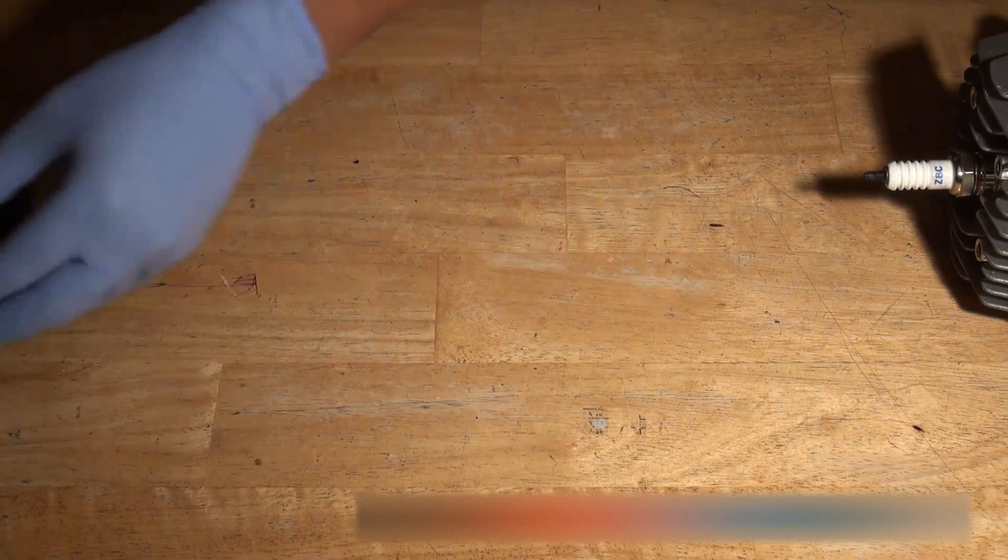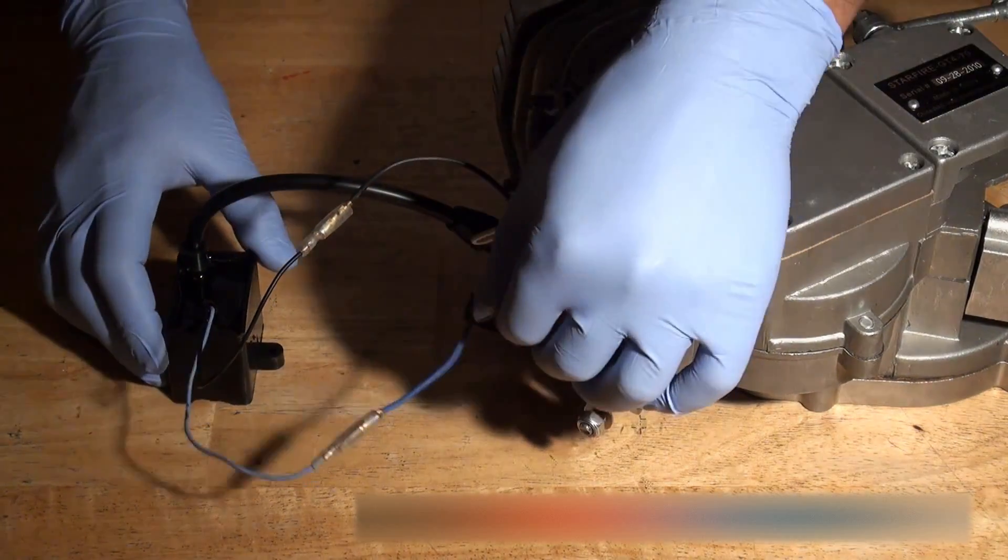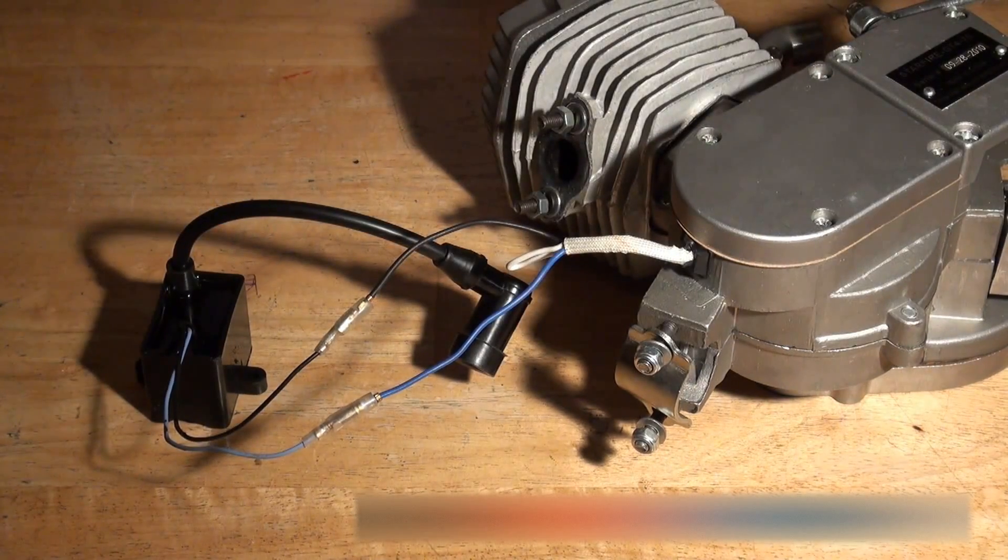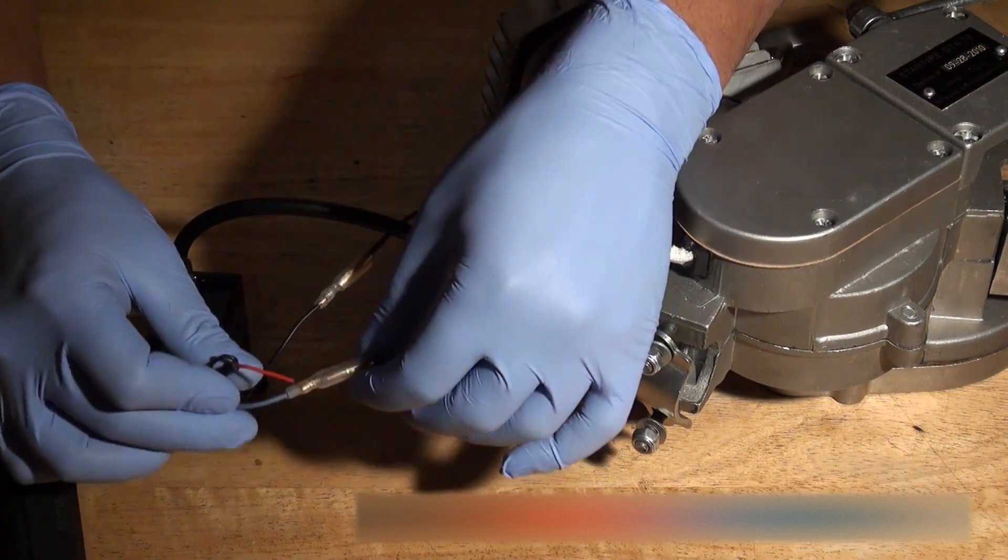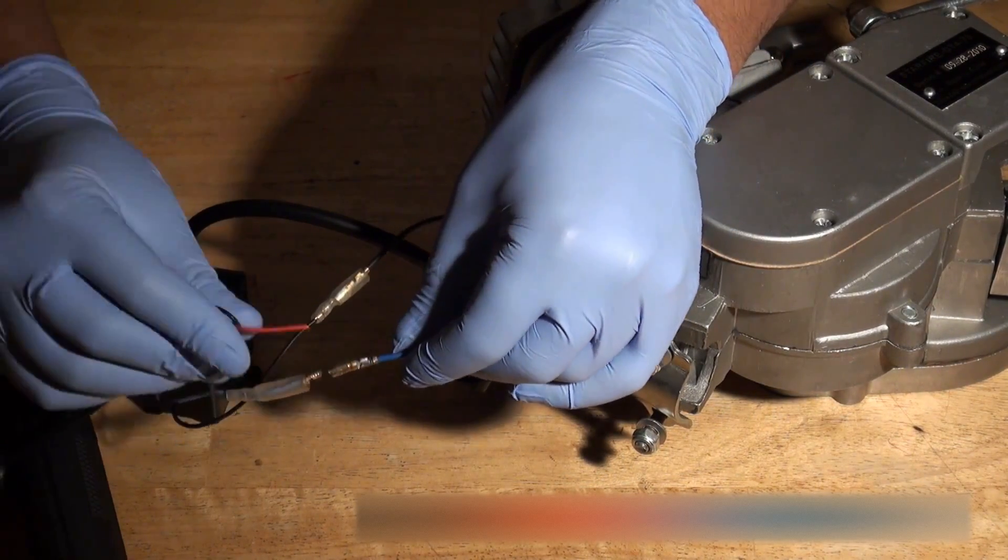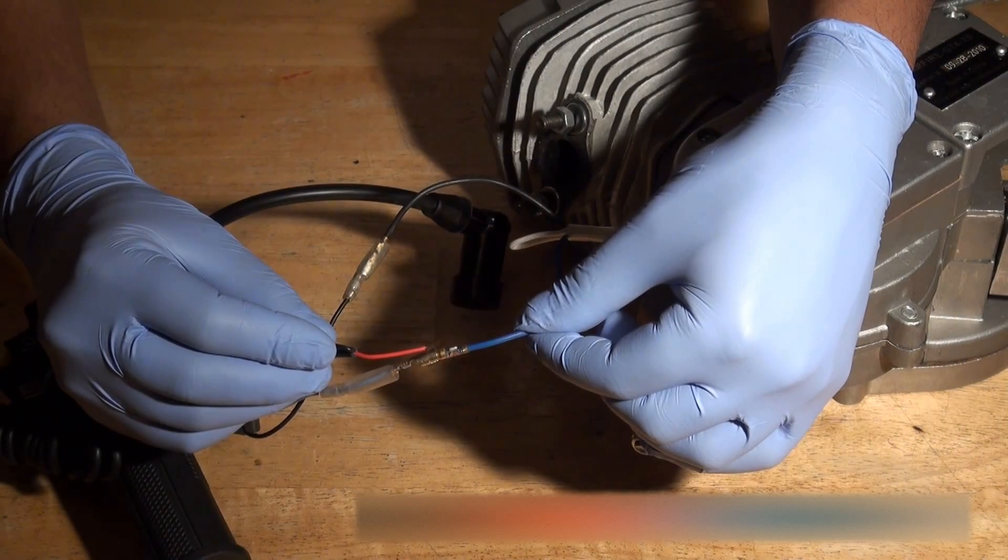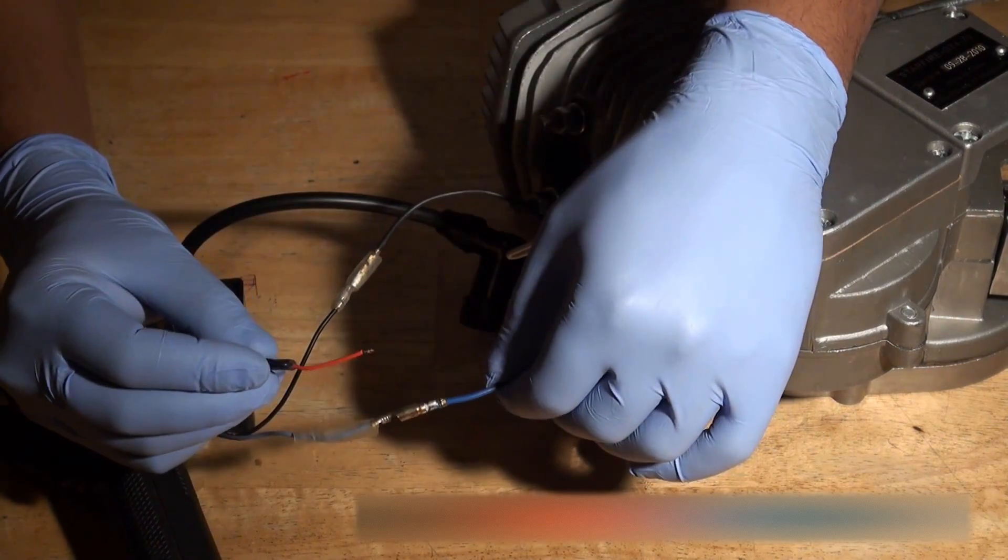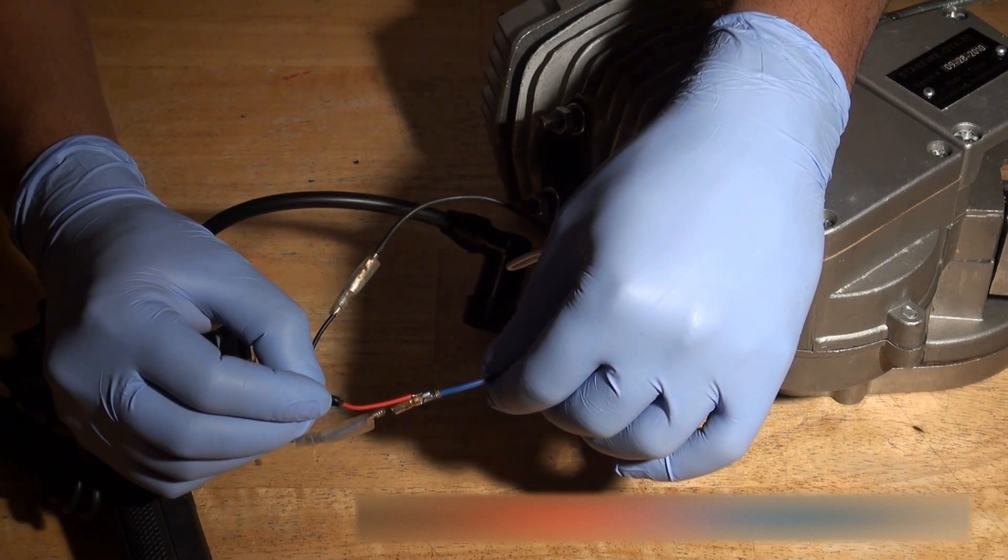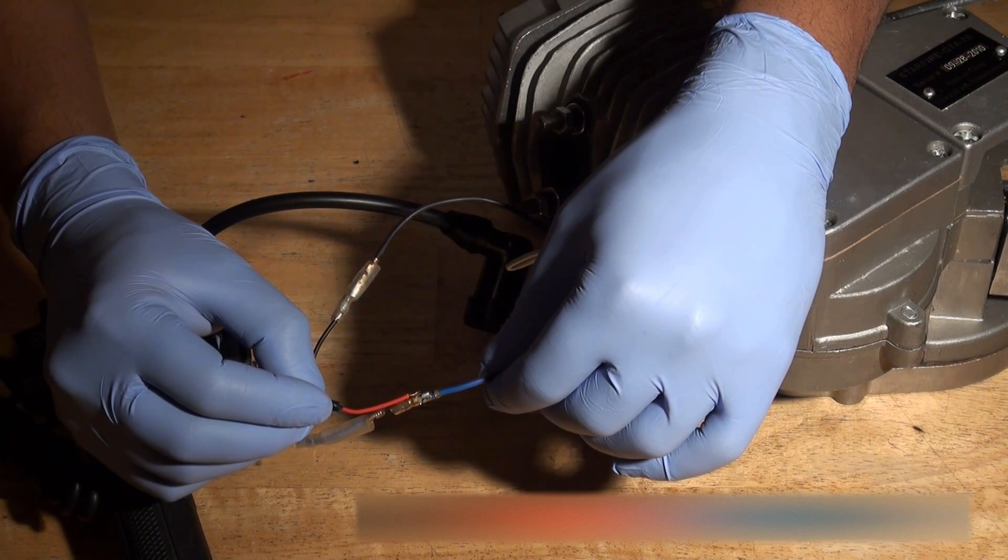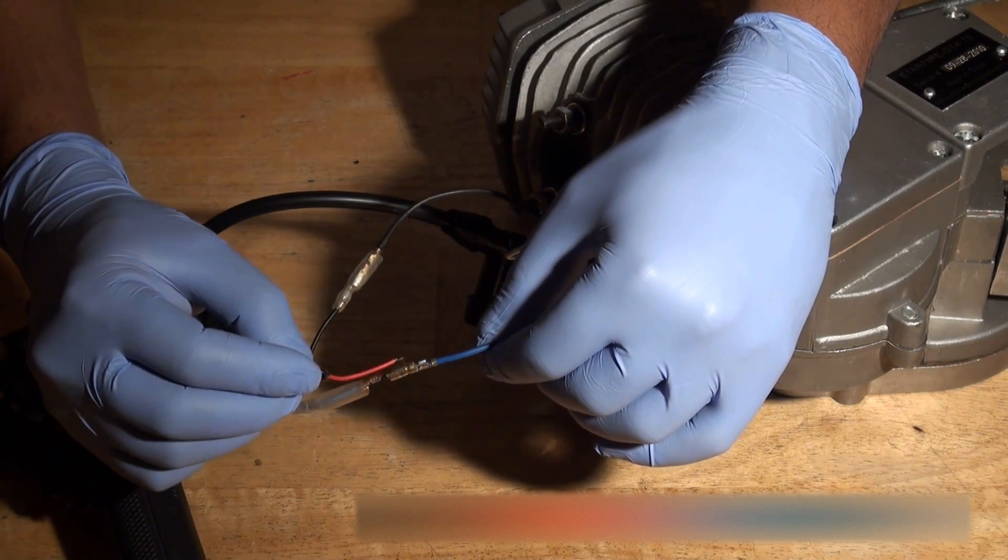So here we are again with our CDI and our wires coming off our engine. What you do is you take this wire here, the red wire from the kill switch, and you want to connect it into this blue wire here. So cut some of the sheath back, expose some of the red cable, and then connect it into here. You can solder it in, which is probably the best, and you can use some heat shrink to cover it and make sure no rain or water is getting on that area.